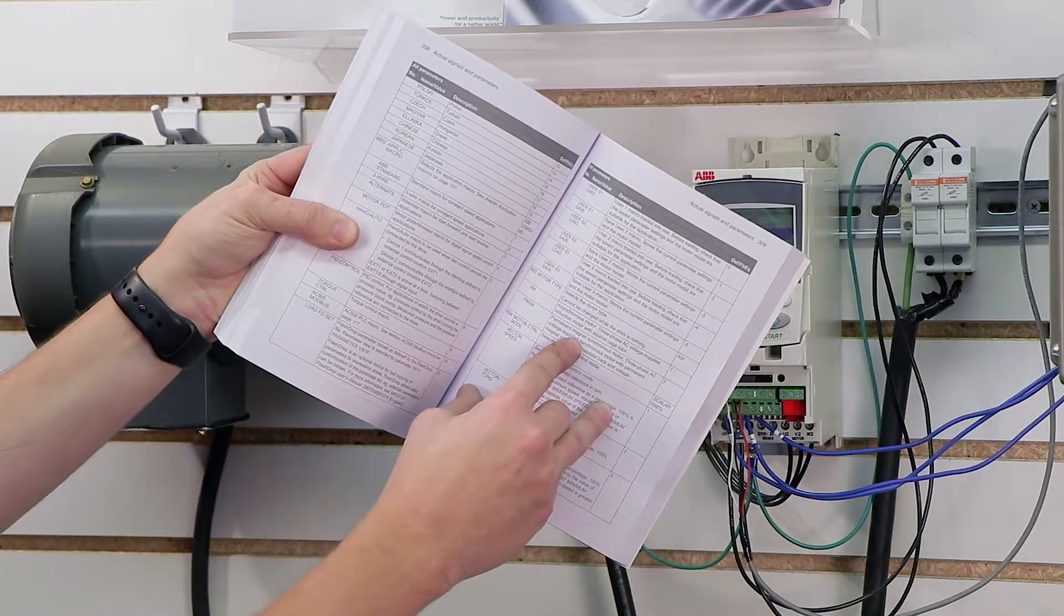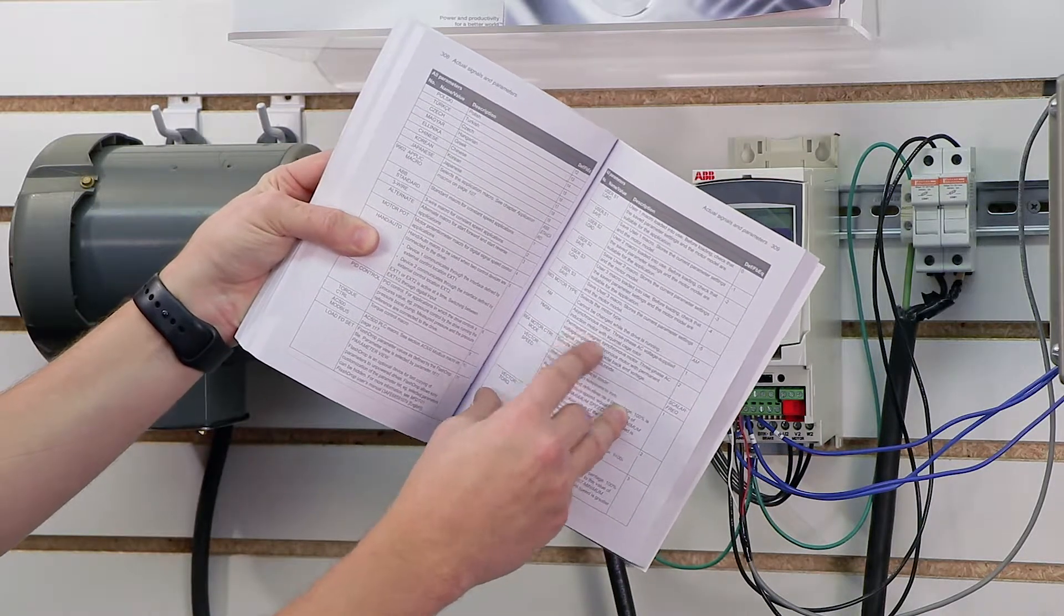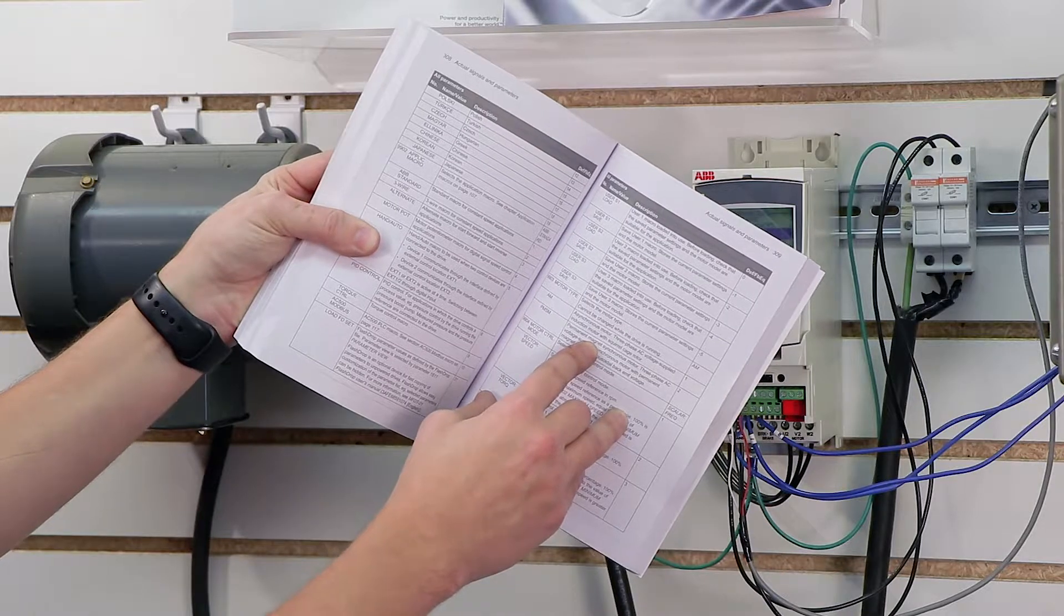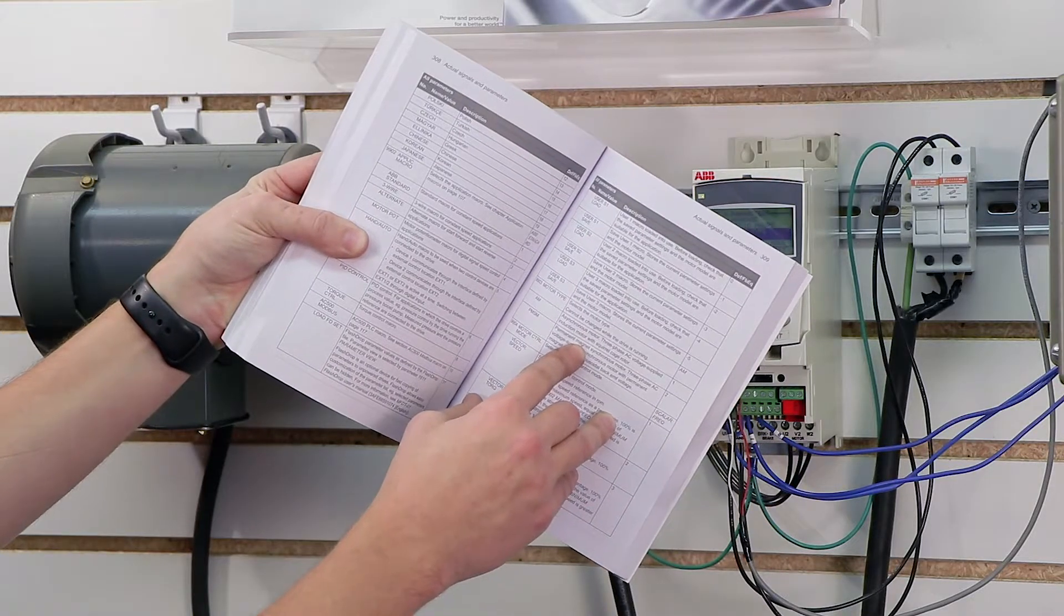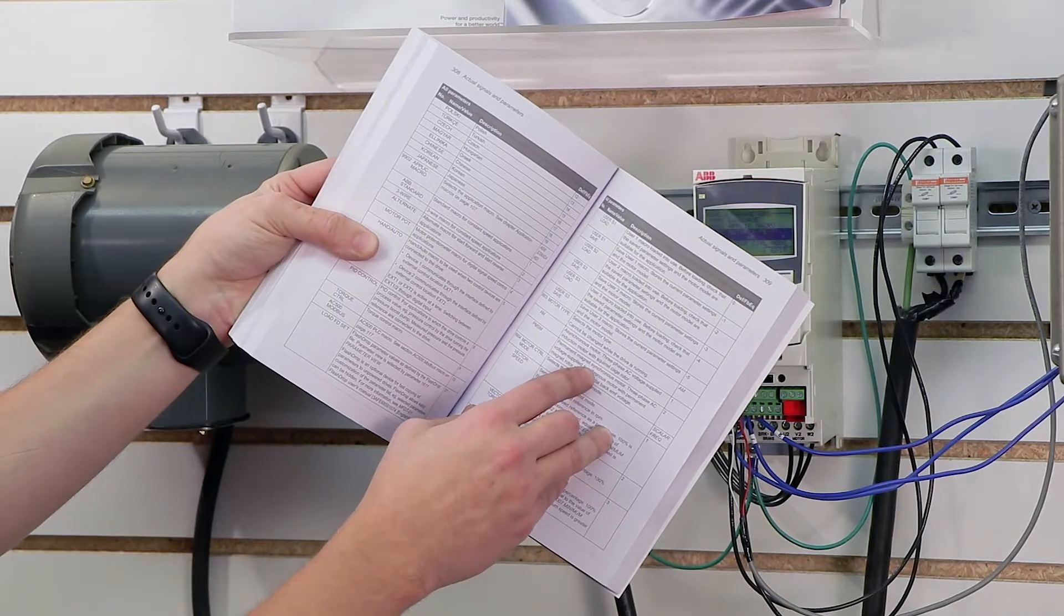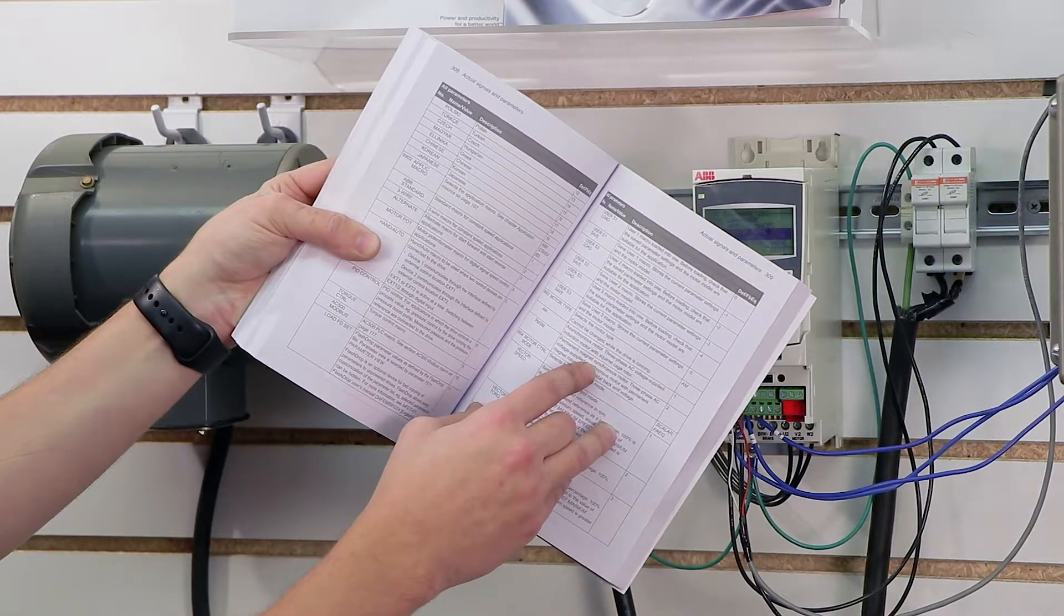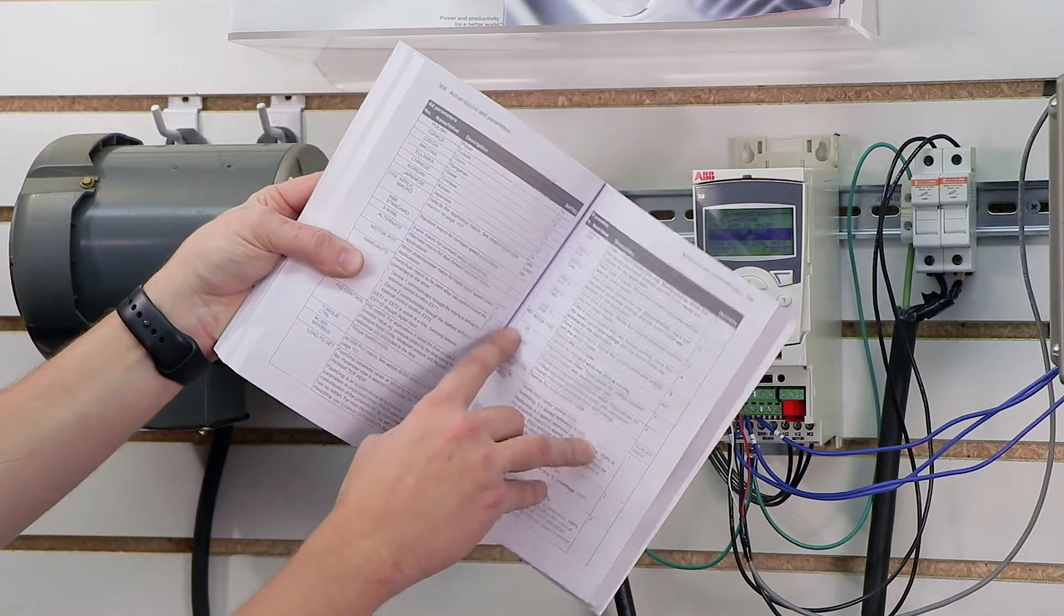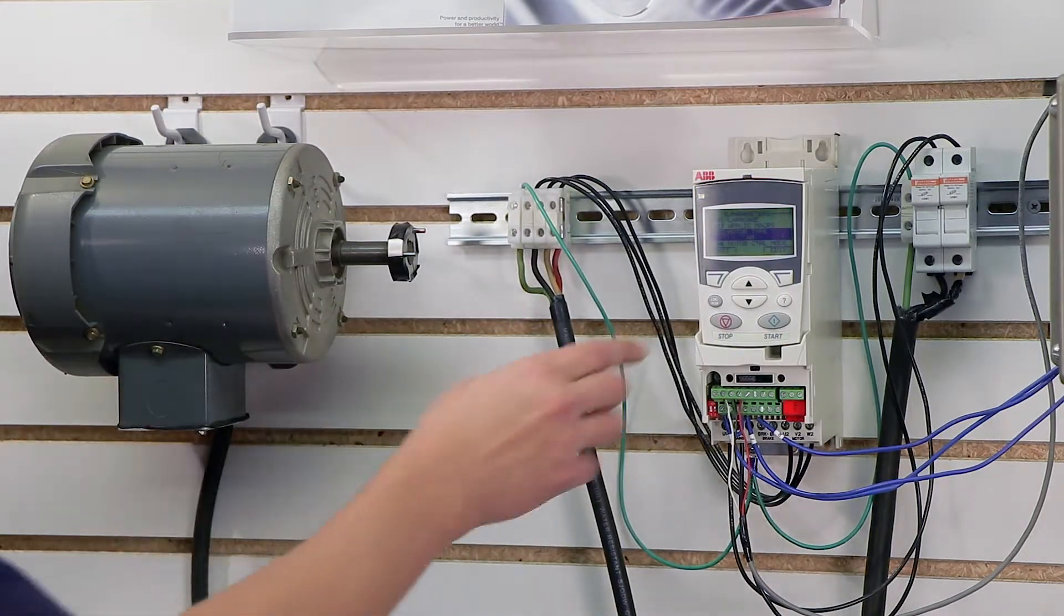PMSM is a permanent magnet motor - essentially, the chassis of it actually contains permanent magnets which are required for rotation. This is a more unique situation. Most people don't have permanent magnet motors; if you have them, you're probably already aware of it. So in my case, I have a standard asynchronous motor, so I'm going to keep mine set to AM.